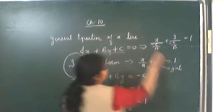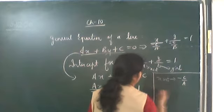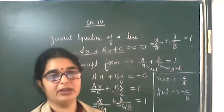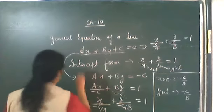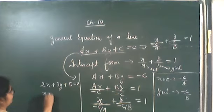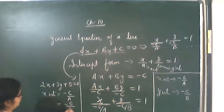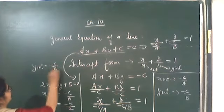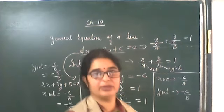For example, suppose the equation is 2x + 3y + 5 = 0. Then the x-intercept is minus c by a = minus 5 by 2, and the y-intercept is minus c by b = minus 5 by 3. It is better to remember these formulas so you can write the answer directly.